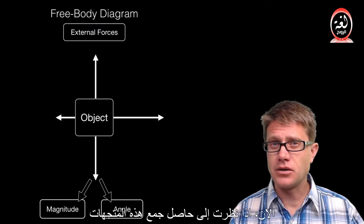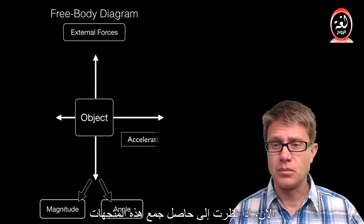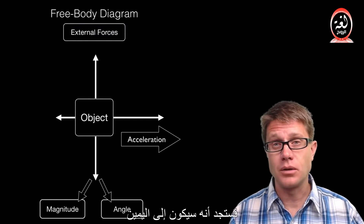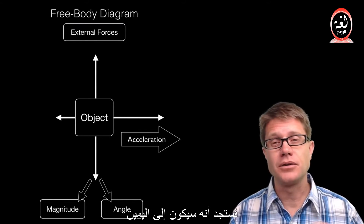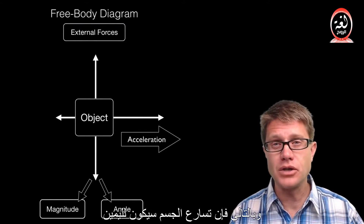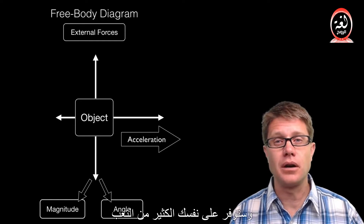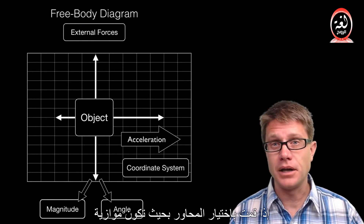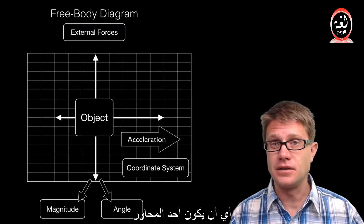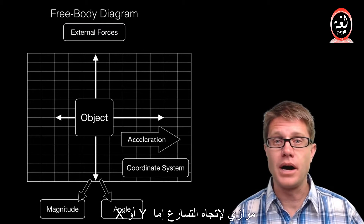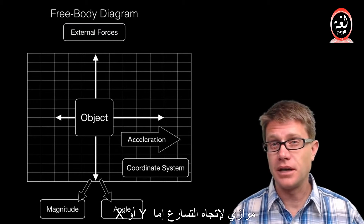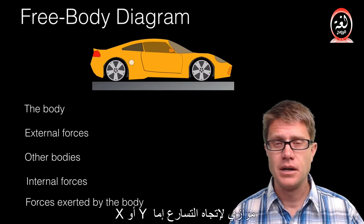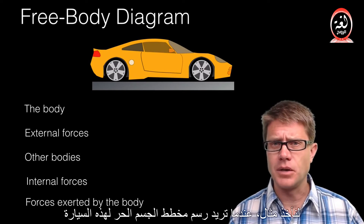If you look at it, the vector sum will tell you the direction of acceleration — in this case to the right. You will save yourself huge headaches if you always set up your coordinate system so that one of the axes, either x or y, is parallel to the acceleration of the object. So let's try some of these.